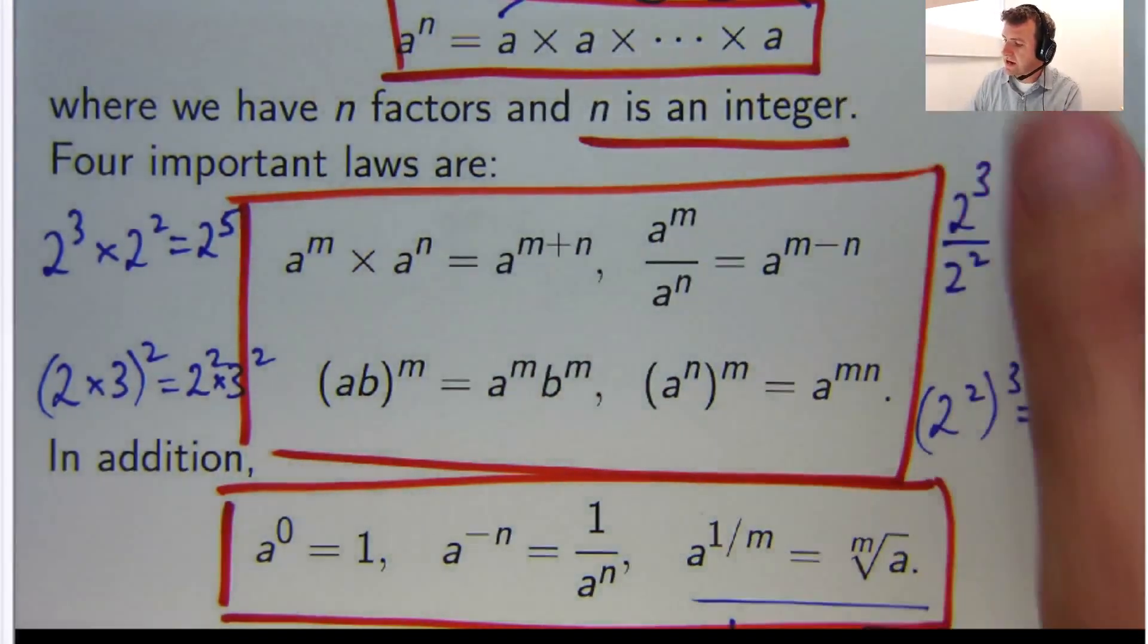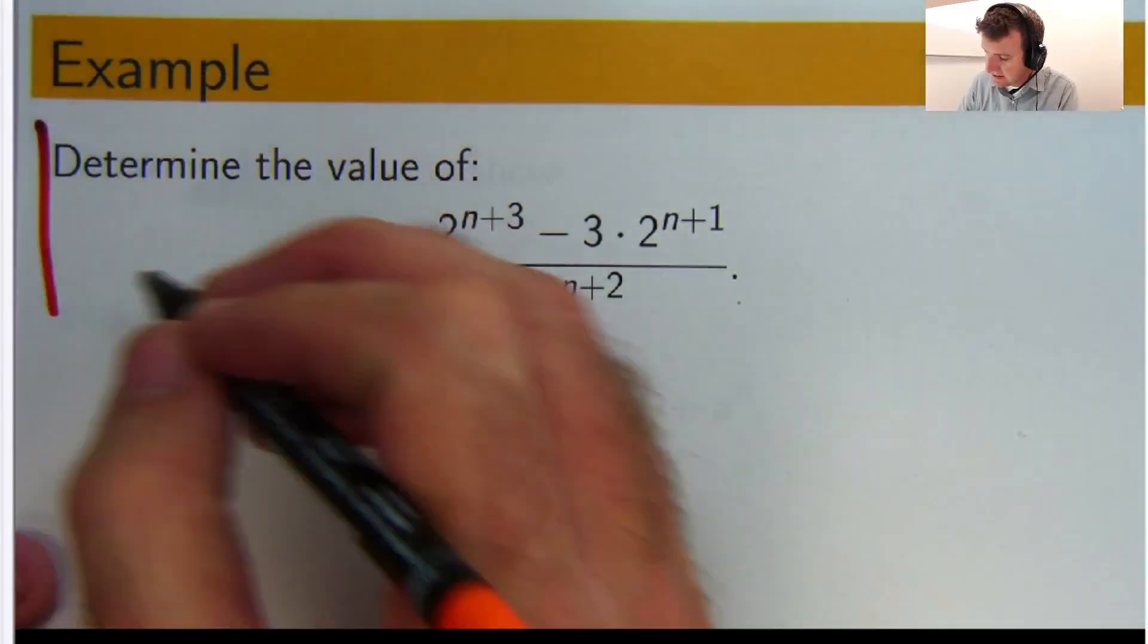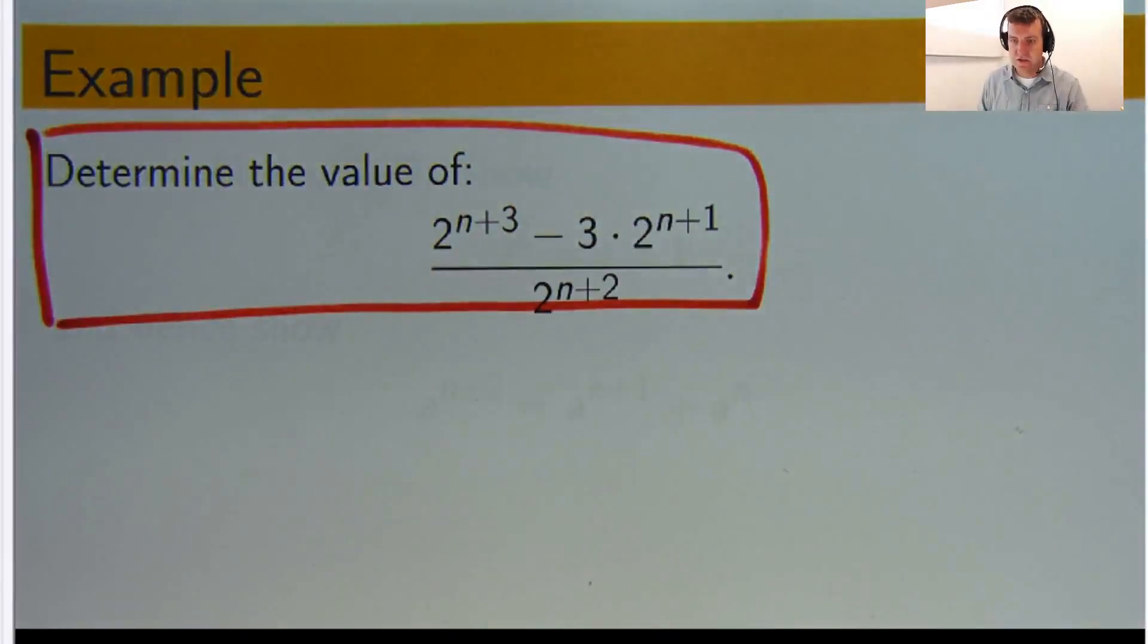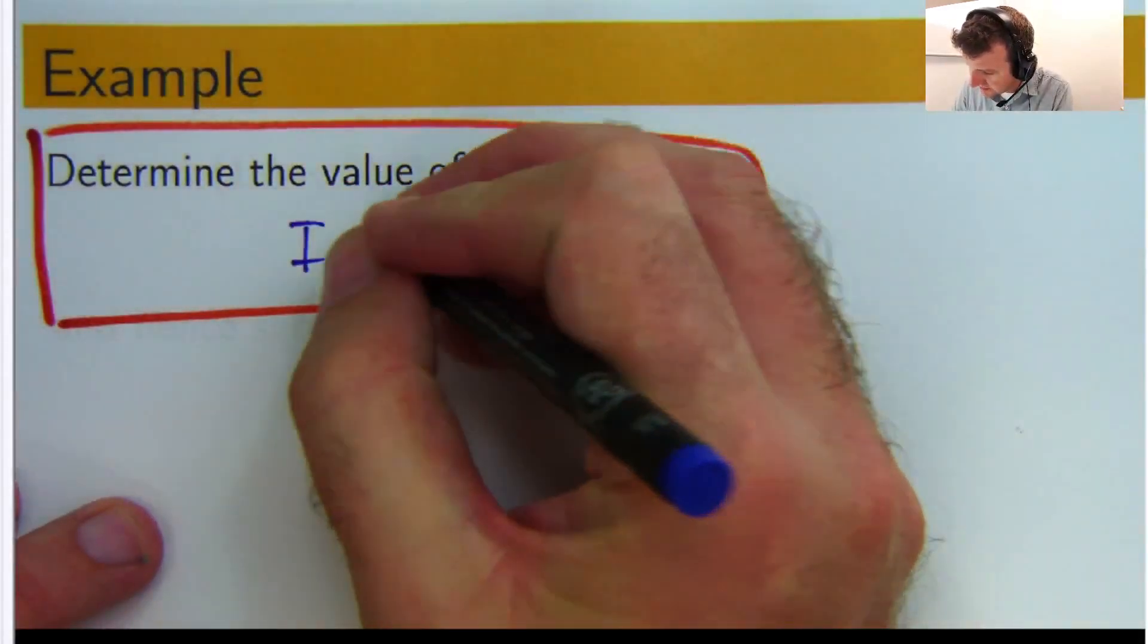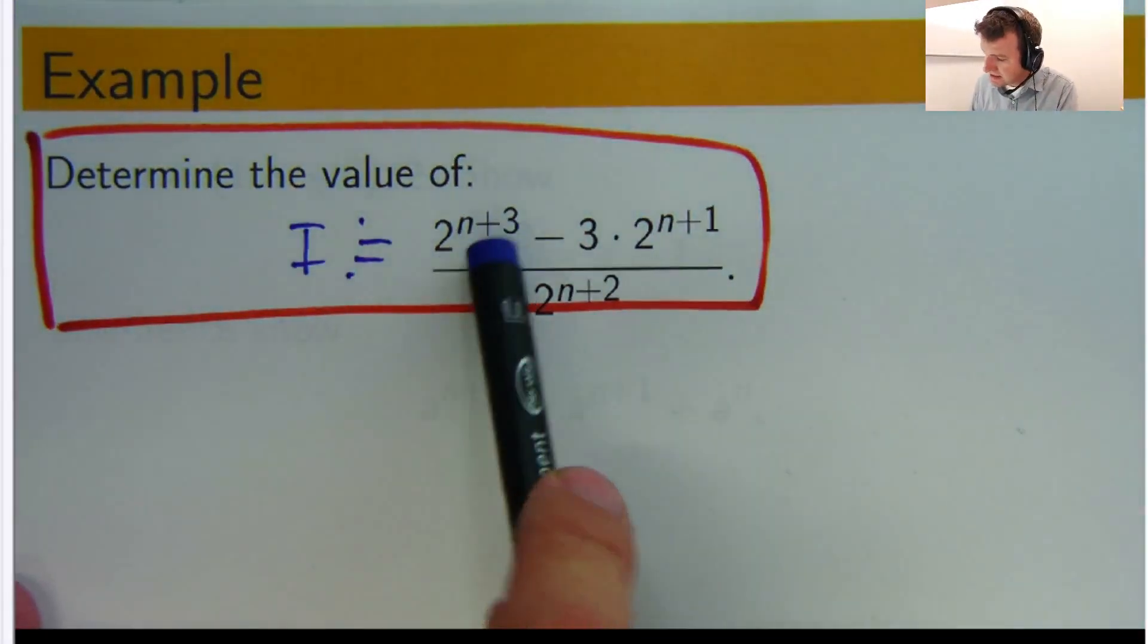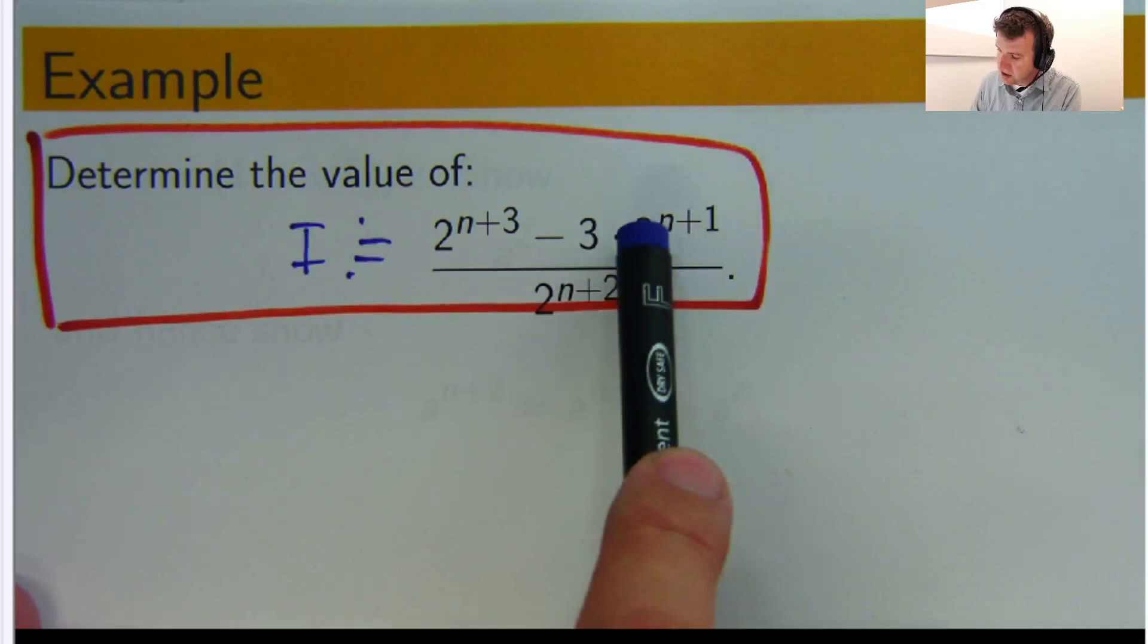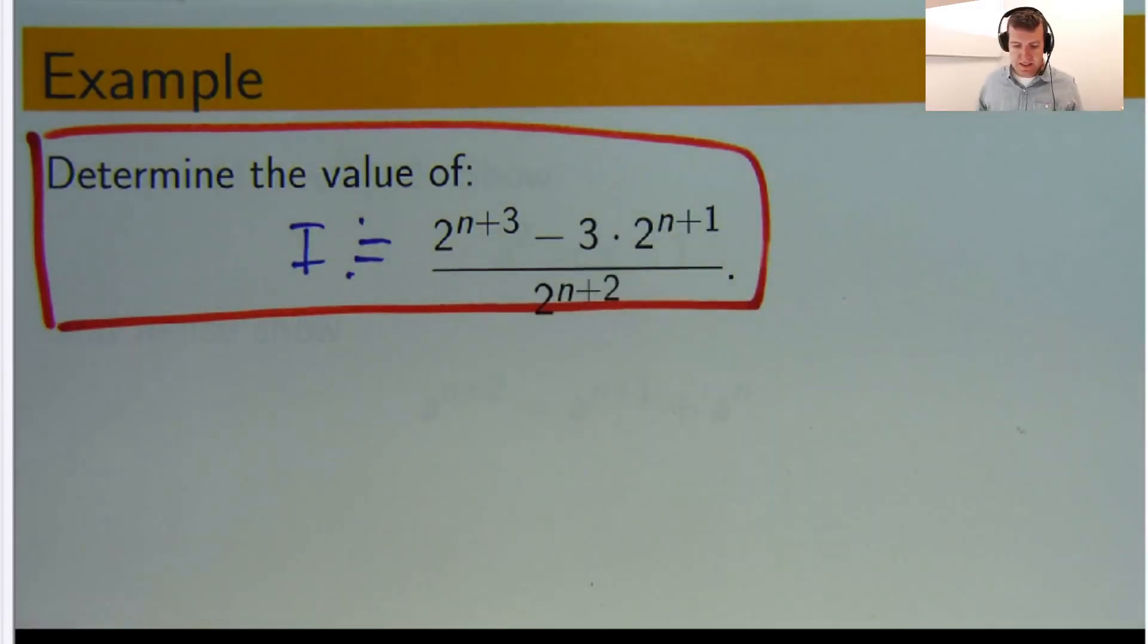We're going to concentrate on how we can apply these ideas to solve the following example. So, I'm asked to determine the value of this expression, so let's call this expression I. All right, so 2 to the n plus 3 minus 3 times 2 to the n plus 1, all divided by 2 to the n plus 2.